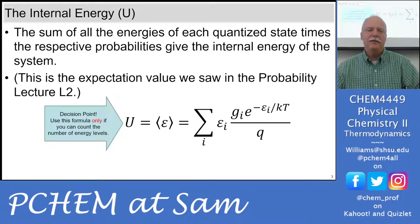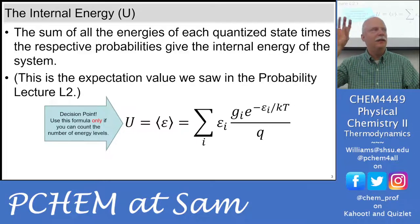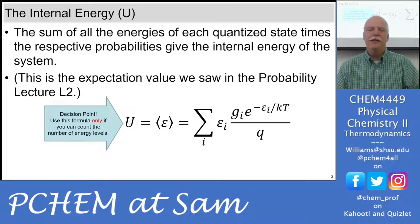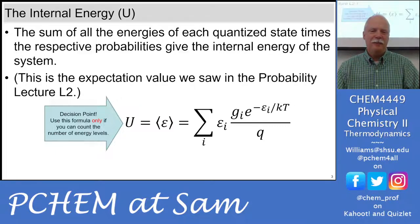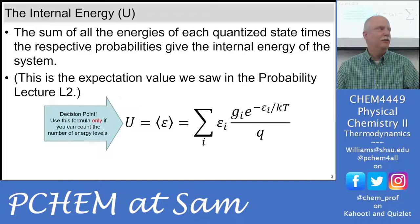This is the expectation value for internal energy. We take the probabilities of each quantized state times the energy of each state, and sum those together. You can only use this if you can count the number of levels. If you're at 10 to the 30 particles, it's probably not good to use this equation — you would use the equipartition theorem, like three-halves RT for each of the degrees of freedom.